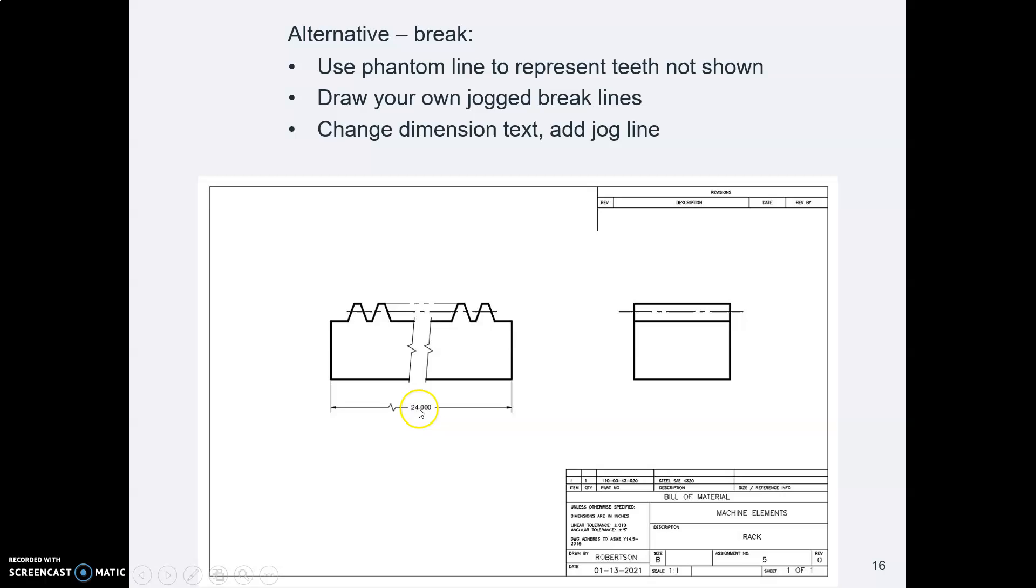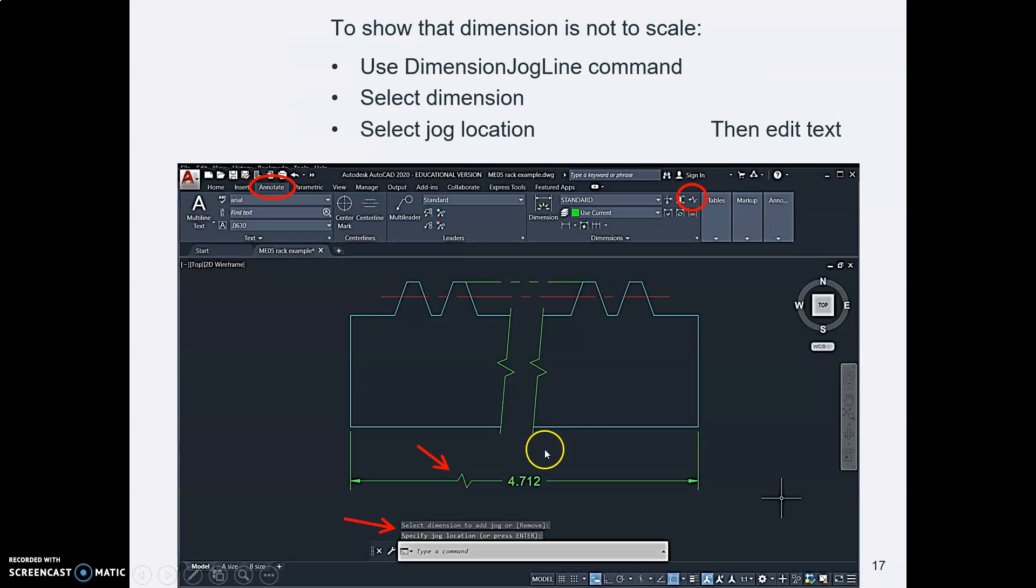And now your length, which is supposed to be 24 inches, is not correct. So you need to tell them this length is not drawn to scale. And you can do that by adding a jog. There are other ways. Another way is to draw a line and underline under the number. I think that's an older way. But AutoCAD makes it simple to add this jog.